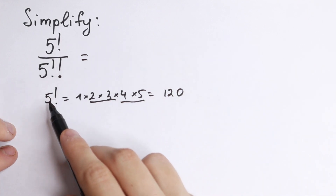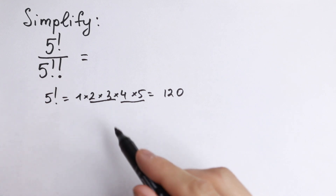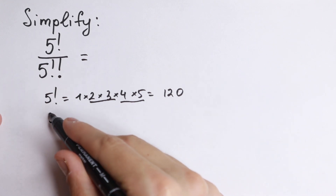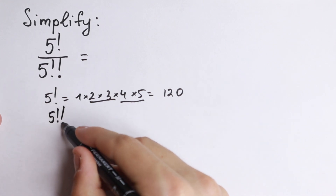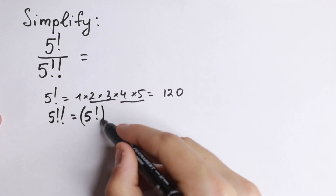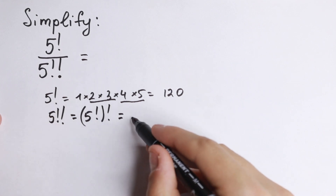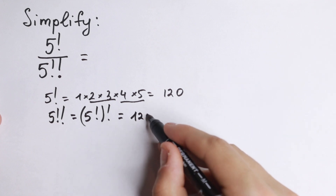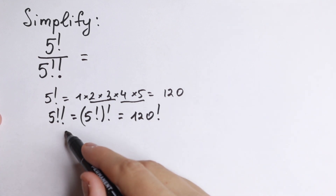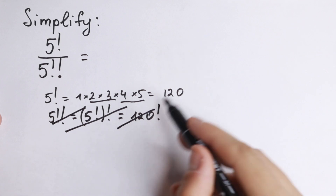But what about our denominator? Right here we have 5 with double factorial sign. It might look like 5 with double factorial sign means 5 factorial, and then once more factorial — so 120 factorial. But this is not correct, and I'll show you why.